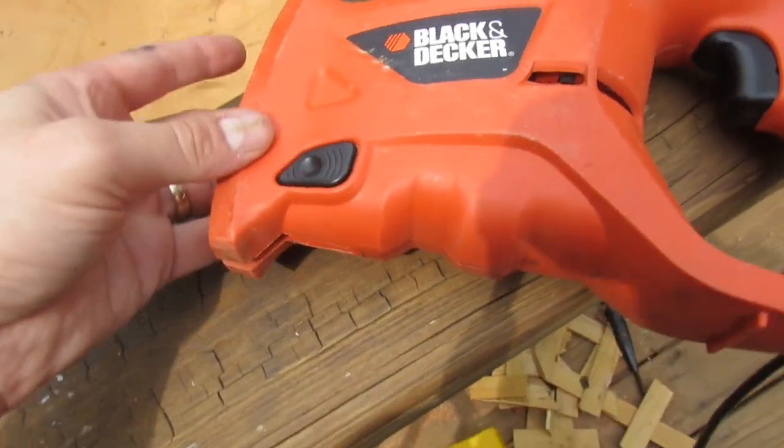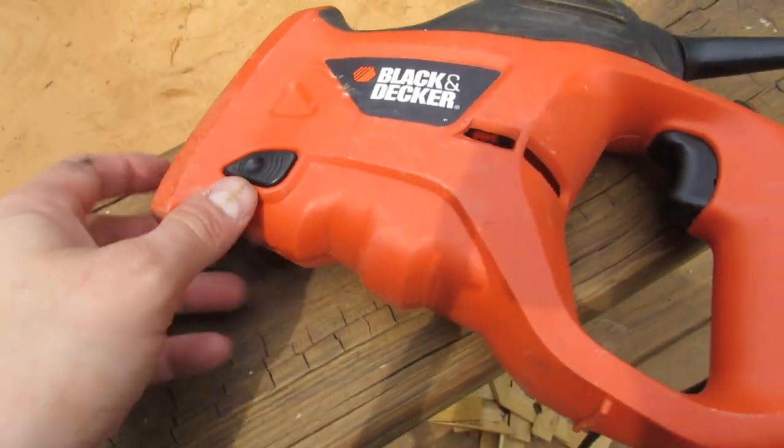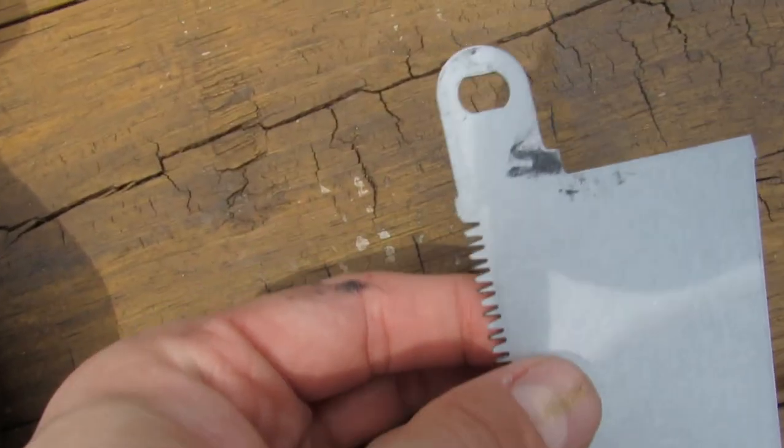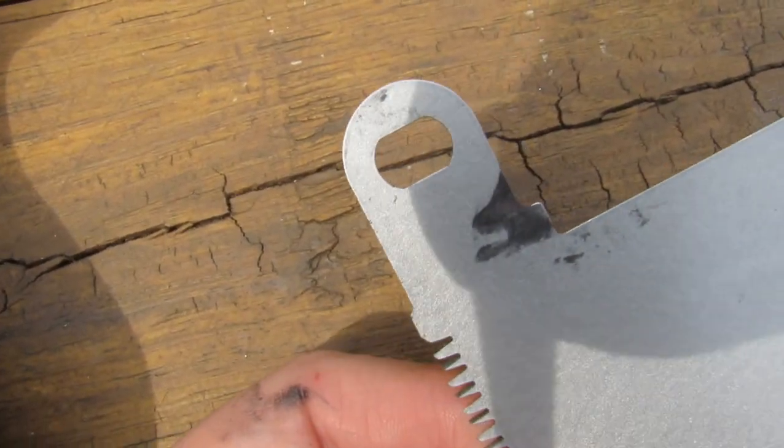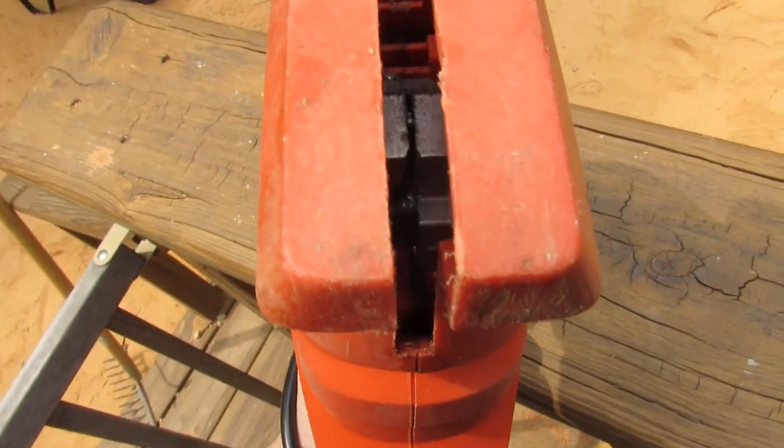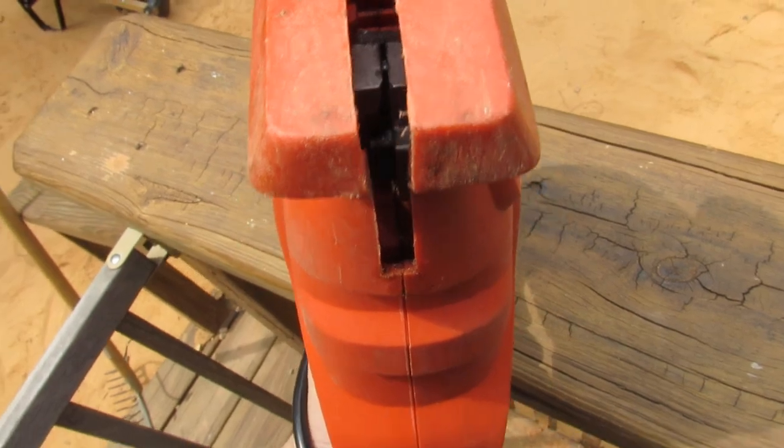Okay, loading the blade on your Black and Decker saw is really easy once you get what they're going for. Look at the shape of the bottom of any of the saws. Now if you look inside here, you can see that same shape.